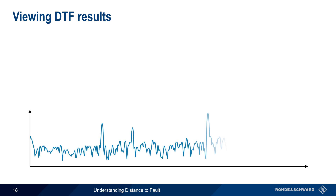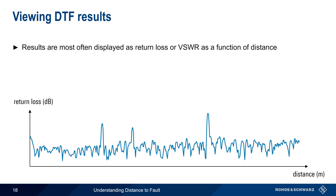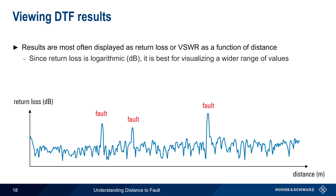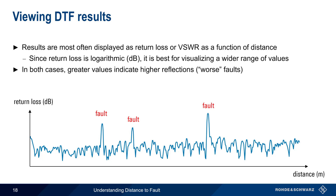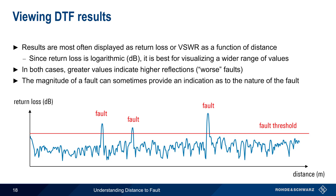After configuring settings and performing calibration, measurement results are normally automatically displayed when the cable under test is attached. Results are most often shown in the form of return loss or VSWR as a function of distance, and peaks in the plot correspond to faults. Since return loss is logarithmic and in units of dB, it is often a better choice than linear VSWR values when looking at a wide range of fault magnitudes. In both cases, greater values indicate higher reflections or worse faults. Many analyzers allow a threshold to be set for defining what constitutes a fault, and in some cases the magnitude of a fault can provide some indication as to the nature of the fault.